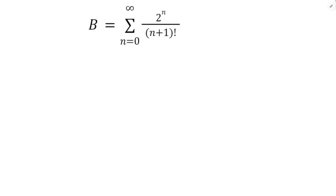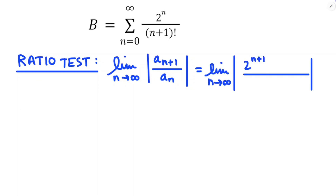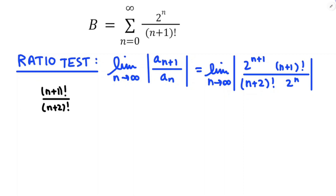For example B, we do the exact same setup for the ratio test: the limit as n approaches infinity of the absolute value of the ratio of a n plus 1 to a n. Plugging in n plus 1 wherever we see n in the general formula for B gives us 2 to the n plus 1 over n plus 1 plus 1 factorial — so 2 to the n plus 1 in the numerator and n plus 2 factorial in the denominator. We divide by the terms of the original by multiplying by the reciprocal, giving n plus 1 factorial in the numerator and 2 to the n in the denominator. Now n plus 2 factorial can be written as n plus 2 times n plus 1 factorial, so n plus 1 factorial over n plus 2 factorial gives 1 over n plus 2.